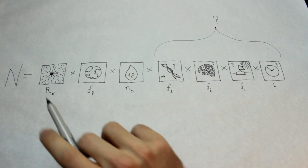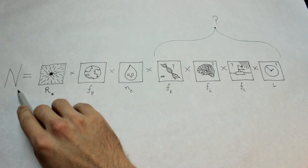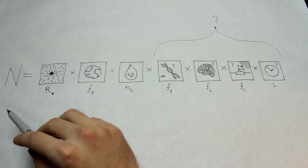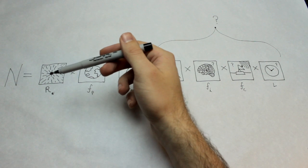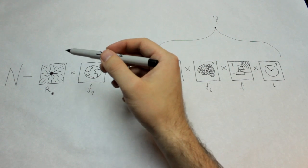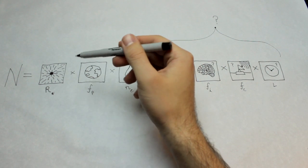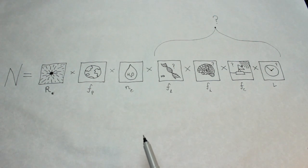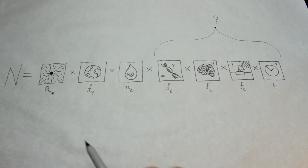So N up here is the total number of civilizations. In order to find that out, we have to multiply several other variables that have to do with the formation of life and intelligence and things like that.